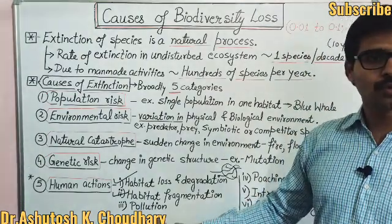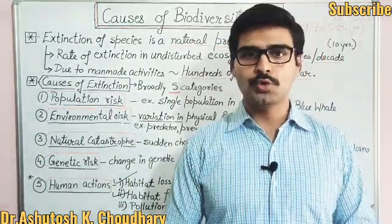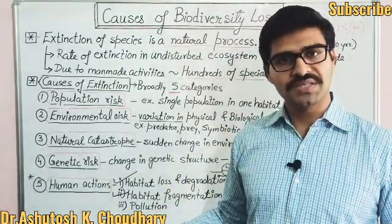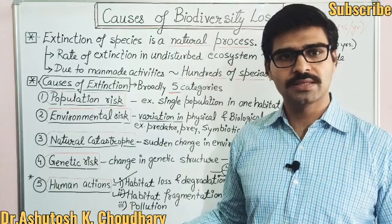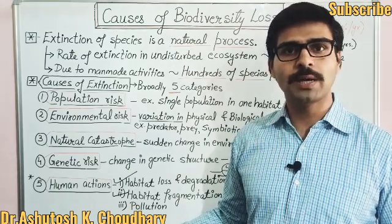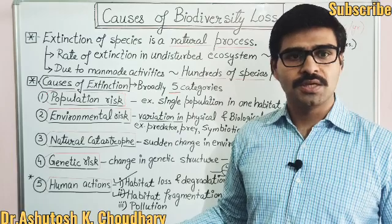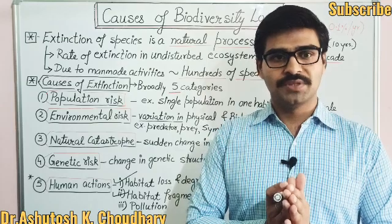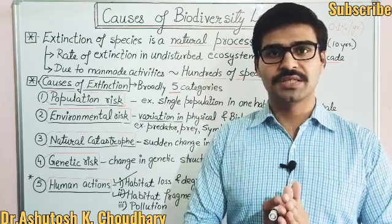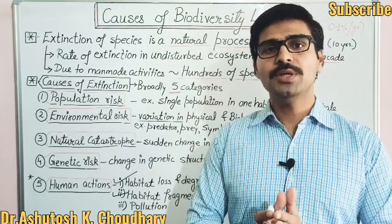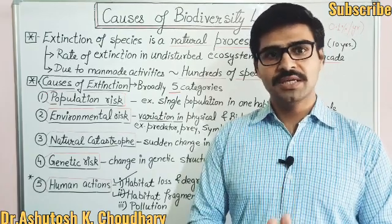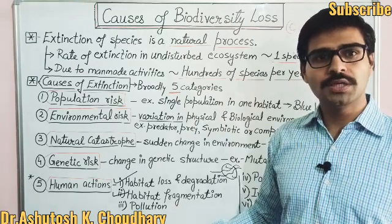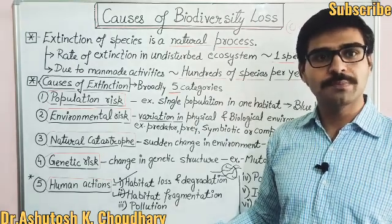The next cause is pollution. Different types of pollution — pesticides and heavy metals — are all responsible for the loss of biological species. For example, the fish-eating birds: generally in the 1970s different cases were observed in which there was extinction of biological diversity due to the use of pesticides, for example DDT.